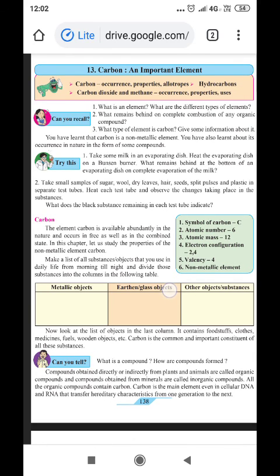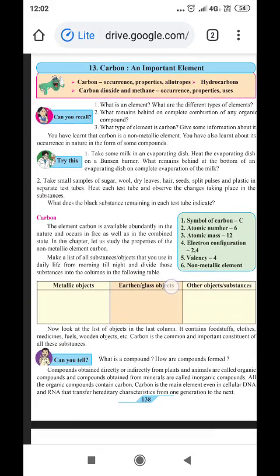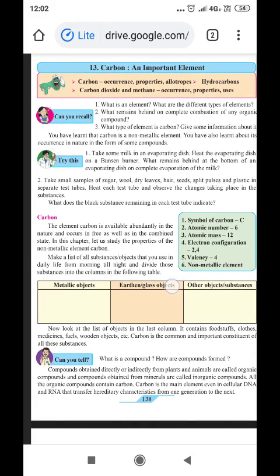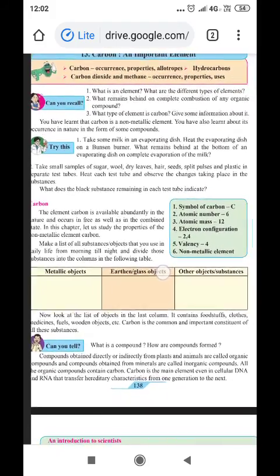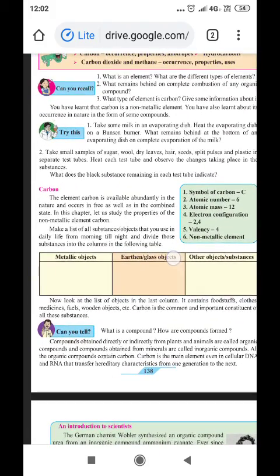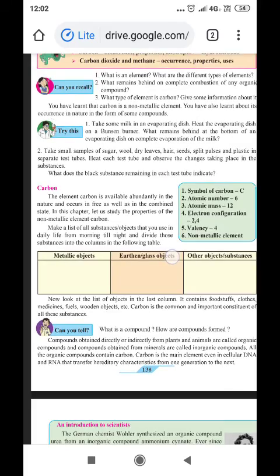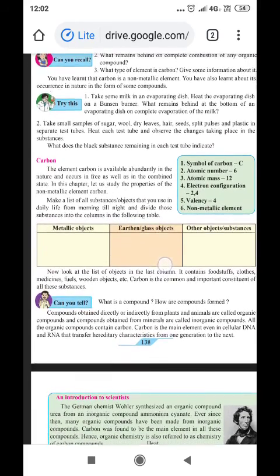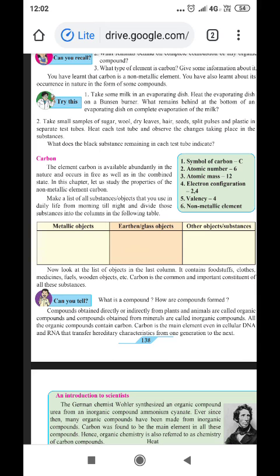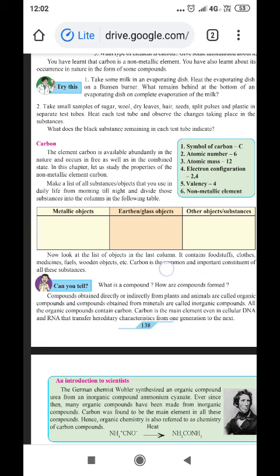Another demonstration: take some small samples of sugar, wool, dry leaves, hair, seeds, split pulses, and plastic in separate test tubes. Heat each test tube and observe the changes taking place in the substances. What does the black substance remaining in each of the tubes indicate? The black substance is nothing but carbon.